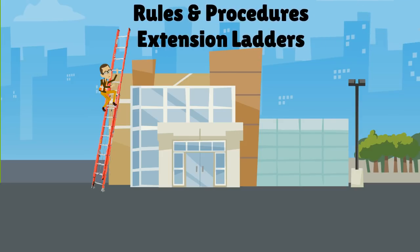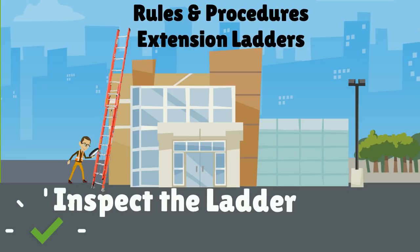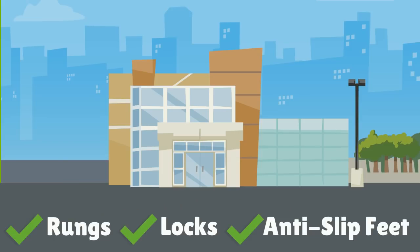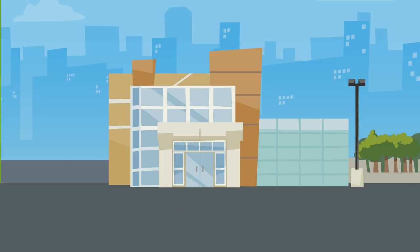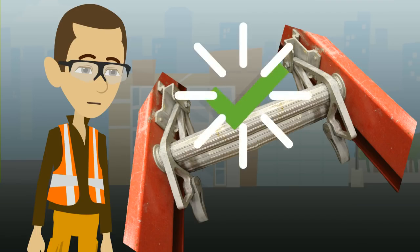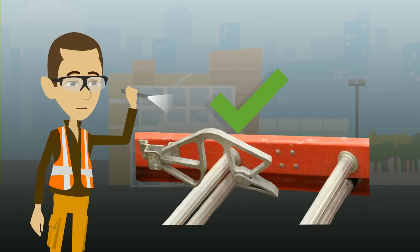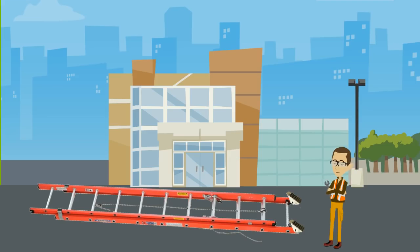Let's look at the rules and procedures that should be followed when using extension ladders. Before each use, inspect the ladder. Ask yourself these questions as you inspect the ladder: Are the rungs in good condition? Do the ladder locks function correctly? Does the ladder have anti-slip feet? And if so, are they in good condition?